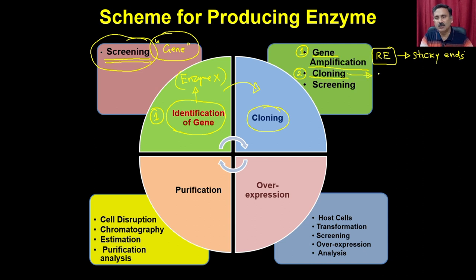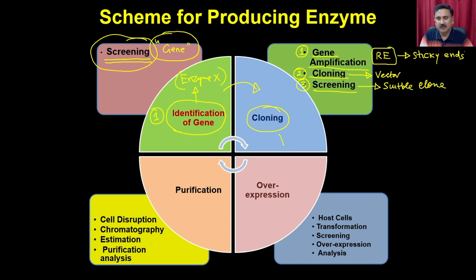Once you clone it into a vector, you screen the clones to select a suitable clone. Once you have the suitable clone, you use it for overexpression — that is step 3.